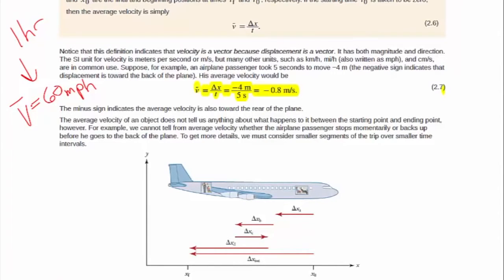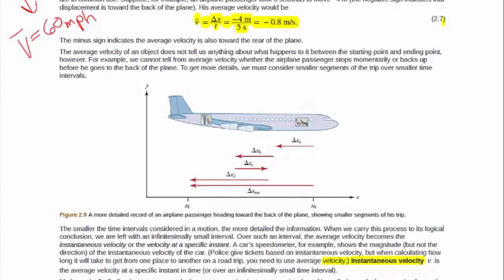You went 60 miles in one hour. But that doesn't necessarily mean you're going 60 miles an hour every instant. Sometimes you might be going 65, sometimes you might be going 55. This is the idea of instantaneous velocity.